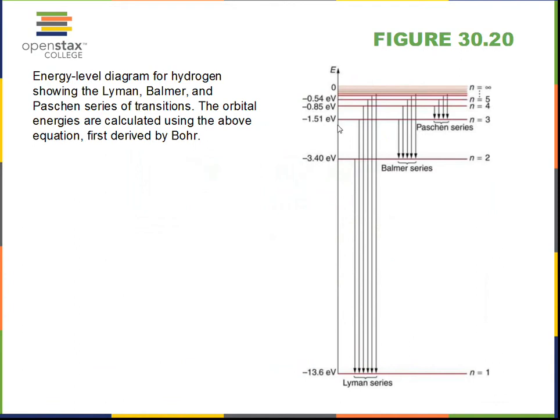You should be saying the Lyman—they're jumping way down to the n equals 1 level. As we subtract the numbers here, minus 0.54 minus a minus 13.6, we get the energy of the photon. That puts us out in the ultraviolet—it's a big energy. The energy gaps here put us in the visual range. Smaller energy here—the photons are less energetic, they're in the infrared.